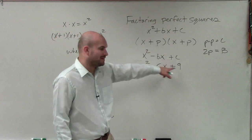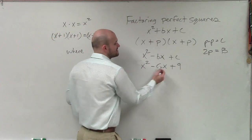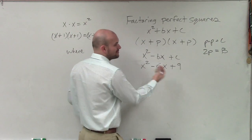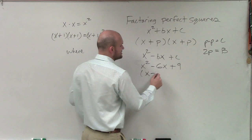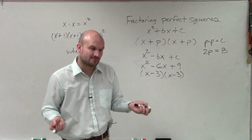So you could say, alright, what two numbers multiply to give me 9 that are exactly the same? You could say 3 and 3. Well, is 6 the same as 2 times 3? Yes, but it's negative. So therefore, my 3 has to be negative. So I could factor this into x minus 3 times x minus 3, or x minus 3 squared.